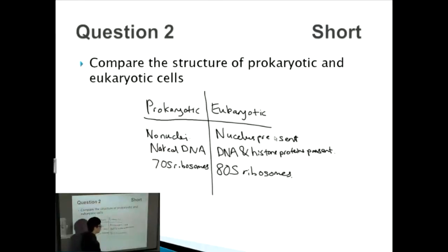What else? Other structures. We talked about nuclei, we talked about ribosomes. How about mitochondria? Prokaryotic cells don't have mitochondria, whereas eukaryotic cells do have mitochondria.